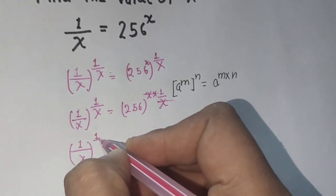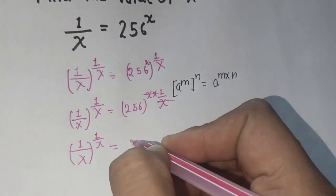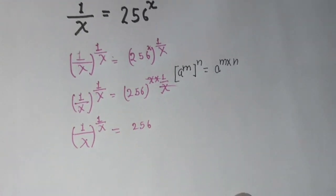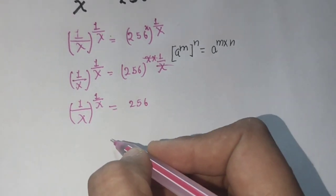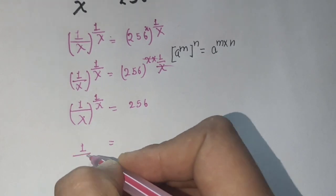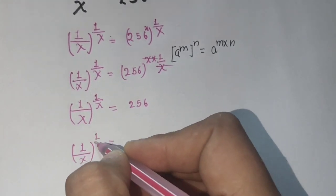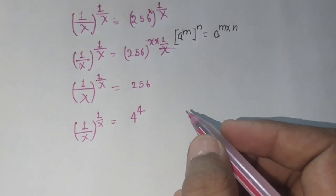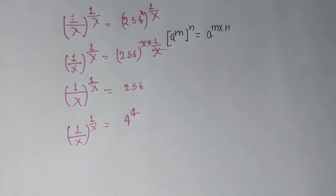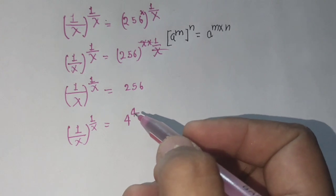1 upon x power 1 upon x equals 256. 256 I can write as 4 power 4. Left side power and base equal, right side power and base equal.